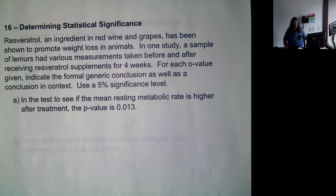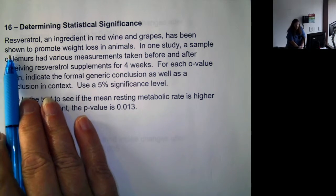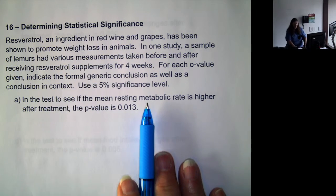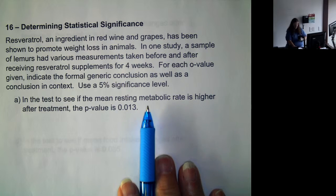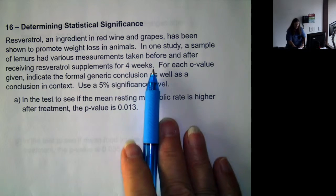Okay, now we're actually going to be using the p-value to determine whether we should reject or not reject the null hypothesis. So we have resveratrol as an ingredient in red wine and grapes. It's been shown to promote weight loss in animals.